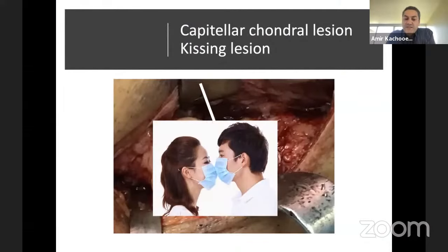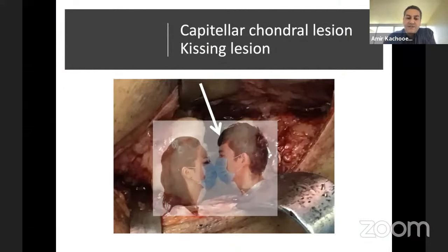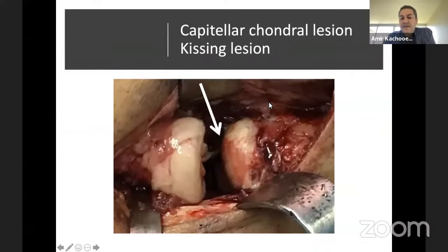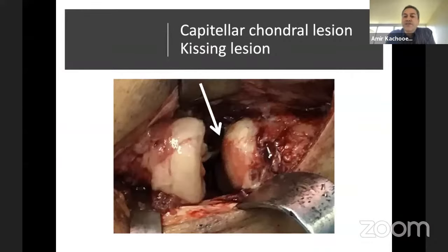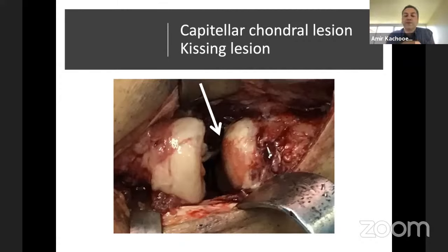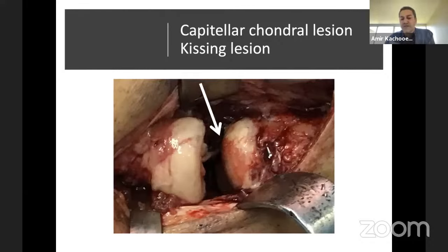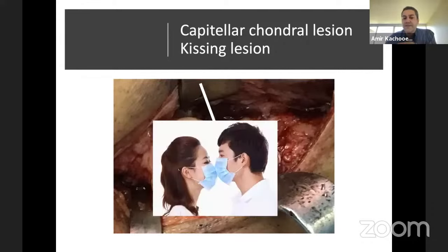One more point to consider is the kissing lesion — a cartilage defect about the capitella. If you have a non-displaced radial head fracture and develop some arthritis on follow-up, it might not be because you maltreated the radial head. It might be because you had injury to the cartilage on the other side, which is called a kissing lesion.